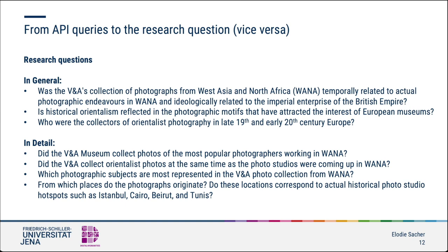While browsing the V&A museum's API guide, I discovered what information I can query for each object and how I can link them together via an API string. As a result, I formulated more specific questions: did the V&A museum collect photos of the most popular photographers working in the region? Did the V&A collect Orientalist photos at the same time as photo studios were coming up? Which photographic subjects are more represented in the V&A photo collection? Do the locations correspond to actual historical photo studio hotspots such as Istanbul, Cairo, Beirut and Tunis?